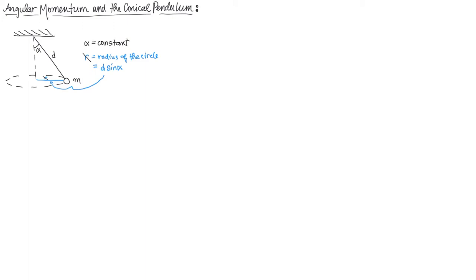We're going to basically calculate the angular momentum of this mass in two cases. Case one: we put our origin at the center of the circle. Case two: we put the origin at the point of attachment. We're going to learn that in one case the angular momentum is constant, and in the other case the magnitude of the angular momentum is constant but its direction changes, so there must be a torque. The choice of origin will affect the magnitude, the direction, and whether the angular momentum is constant.